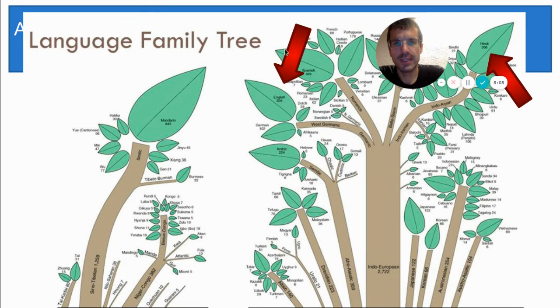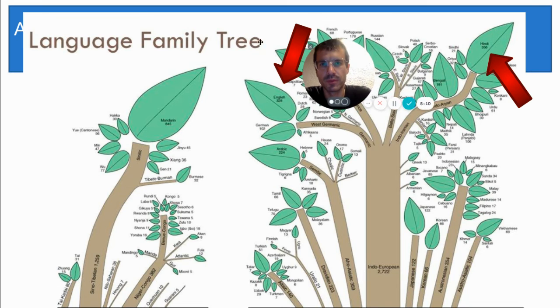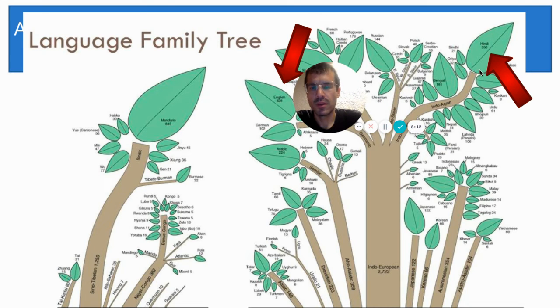A language like Hindi, which is on the right side, over here, is also part of the Indo-European family. But it is part of a different branch than English is. In this case, it's part of the Indo-Aryan branch. So we can say that English, German, and Hindi are distantly related. They're all part of the same family. But English and German are more closely related than English and Hindi.